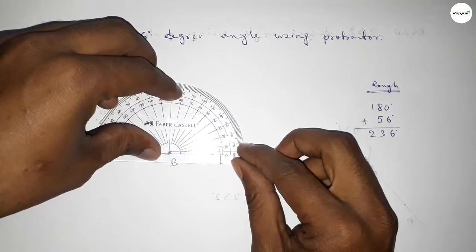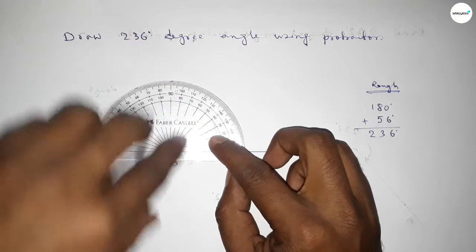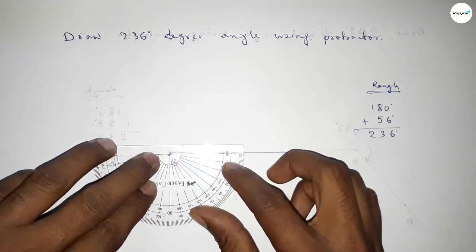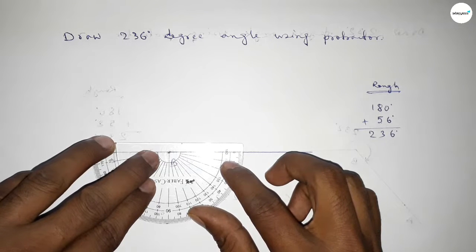First we have to count 180 degree angle. So putting the protractor on point B by this way and counting 180 degrees. This is 180 degrees.